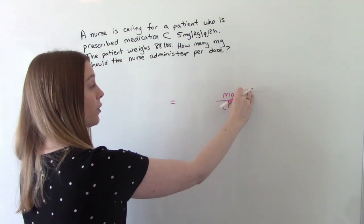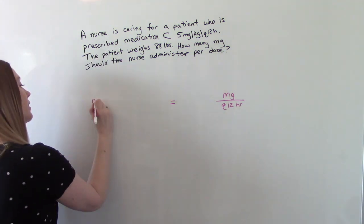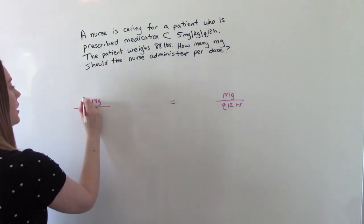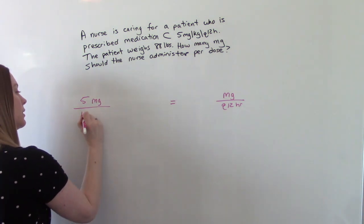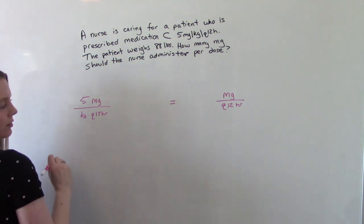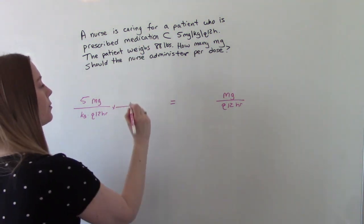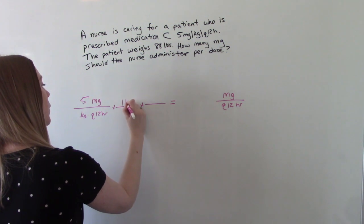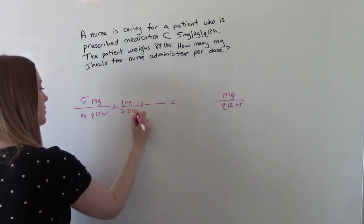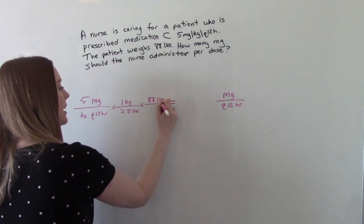But we know this is what we're looking for in our numerator, and this will be in our denominator. So we'll have milligrams at the top, so 5 mg per kg Q12. And then we need to do a conversion, because we have pounds. So 1 kg is 2.2 pounds. And then we have our patient that weighs 88 pounds.